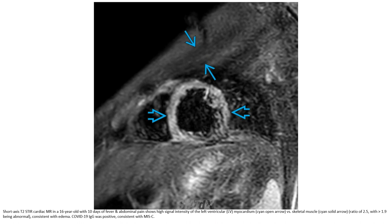T1 contrast-enhanced MRI in a six-year-old with ten days of fever and abdominal pain, showing high-signal density of the left ventricular myocardium and skeletal muscle, consistent with myocarditis and rhabdomyolysis due to COVID-19, consistent with MIS-C.